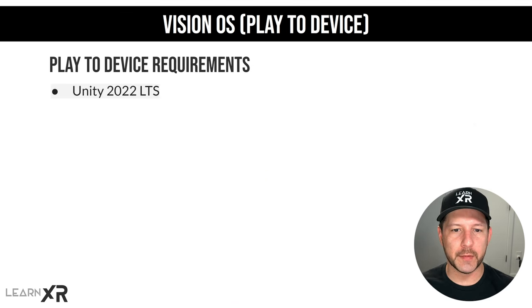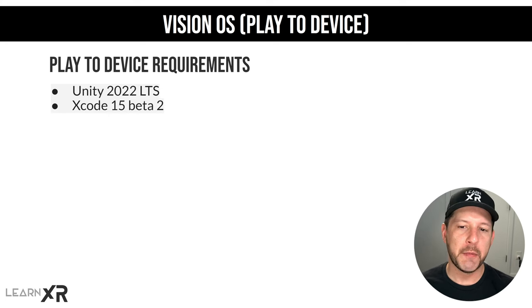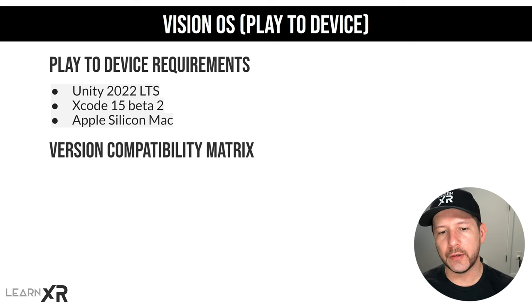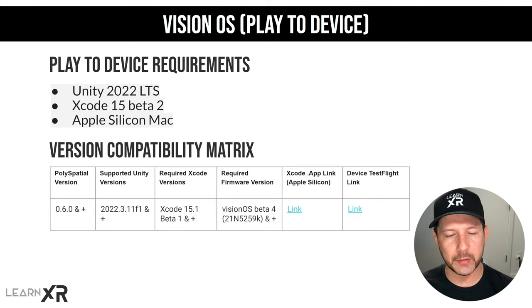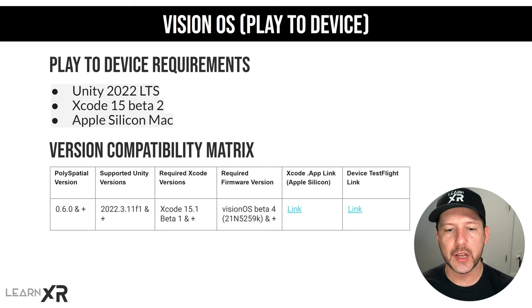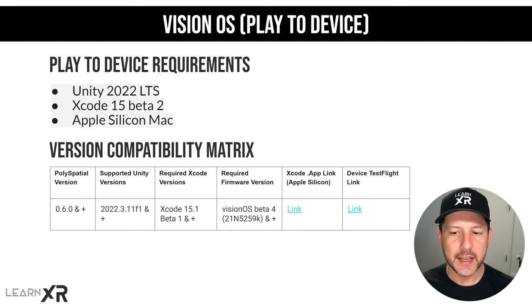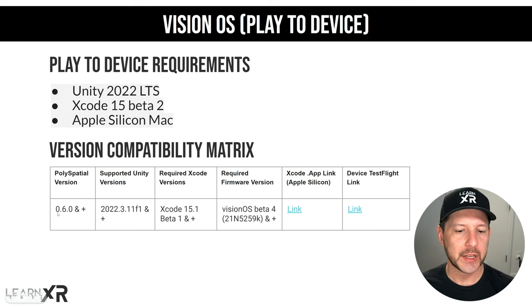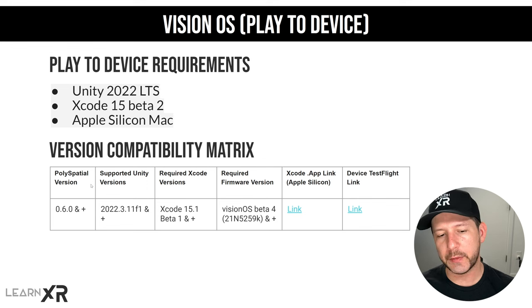Play to Device requirements: you're going to need Unity 2022 LTS, Xcode 15 Beta 2 or greater, and an Apple Silicon Mac. Unity provides a really helpful compatibility matrix on their forums and documentation, which I'll link below. It's really important — I couldn't get this to work initially because I was using an older version, 0.5 instead of 0.6. The PolySpatial version you need is 0.6.0 or greater. The version I have right now is 0.6.4 and that works.